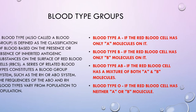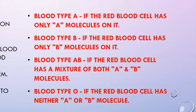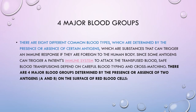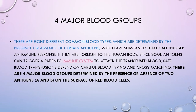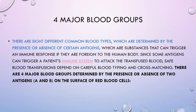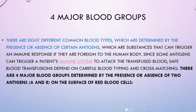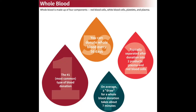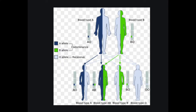The frequencies of the ABO and Rh blood types vary from population to population. There are eight different common blood types, which are determined by the presence or absence of certain antigens — substances that can trigger an immune response if they are foreign to the human body. Since some antigens can trigger a patient's immune system to attack the transfused blood, safe blood transfusions depend on careful blood typing and cross-matching.